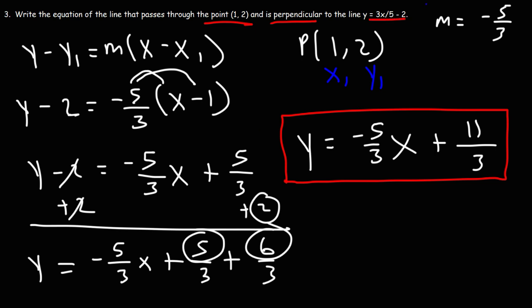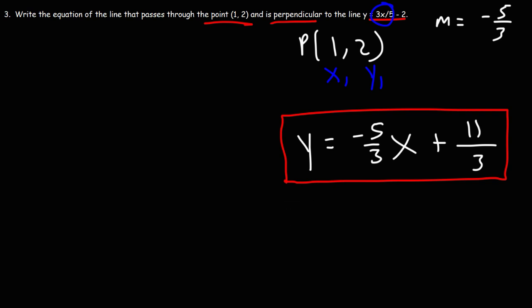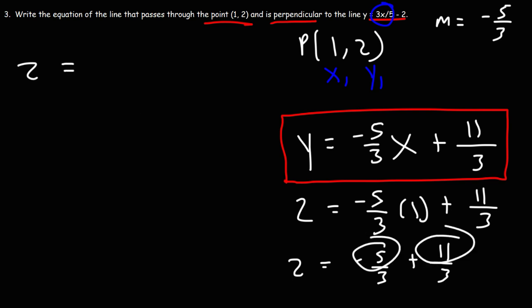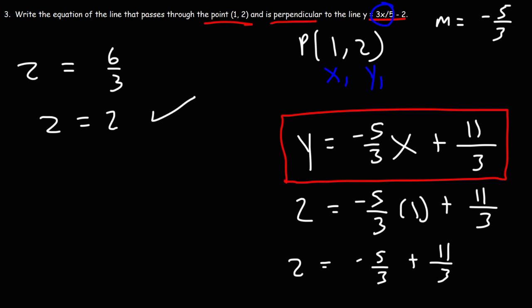So the equation of the line through (1, 2) perpendicular to y equals 3/5 x minus 2 is y equals negative 5/3 x plus 11/3. Here the slope is positive 3/5; the new line has the negative reciprocal, negative 5/3. We can check by plugging in the point (1, 2): replacing y with 2 and x with 1, negative 5/3 times 1 is negative 5/3, and negative 5 plus 11 is 6, so 6/3 equals 2. Both sides equal 2, confirming the point is on the line.